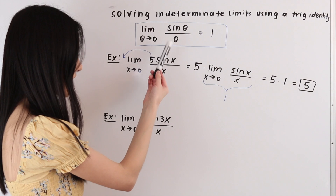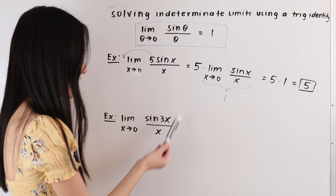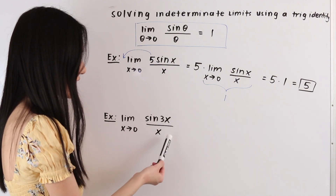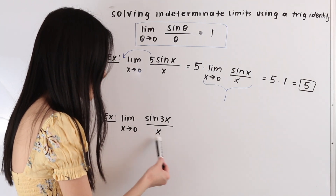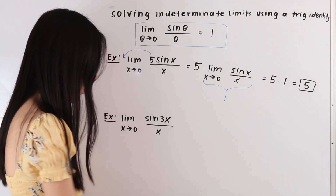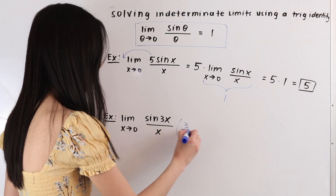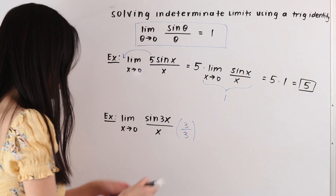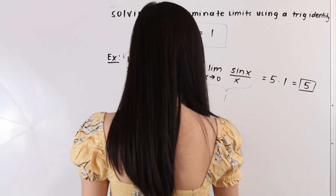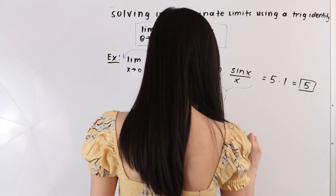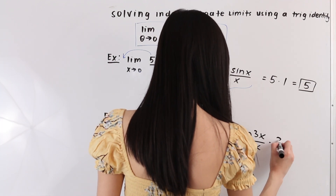In this case we want to use the trig identity to solve this limit. We see that theta here is three x, but in the denominator we have x rather than three x. So we want to get the denominator to equal the angle, and to do that we are going to multiply by three over three. This gives us the limit as x approaches zero of sine of three x over three x, times three.